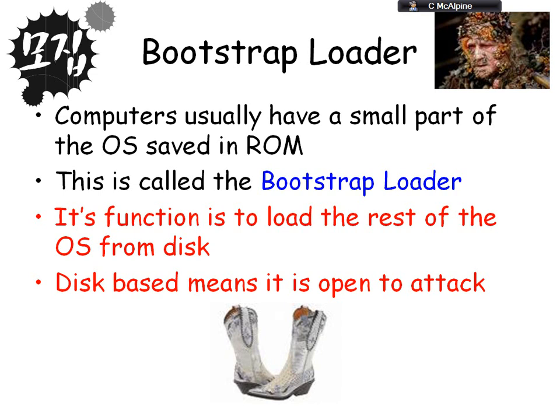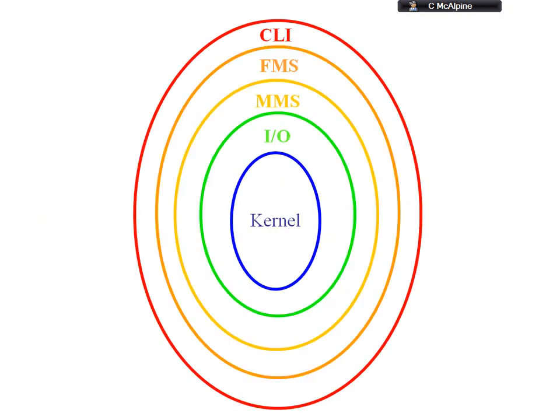This is a diagram you need to understand — the different parts and layers of a single-user operating system. You need to be able to describe the function of each layer, usually with a task like transferring a file from a memory card on a camera. From the outside we have the command language interpreter, the file management system, the memory management system, the input/output layer, and the kernel. The kernel sits at the center of everything, controlling all processes and handling any interrupts.